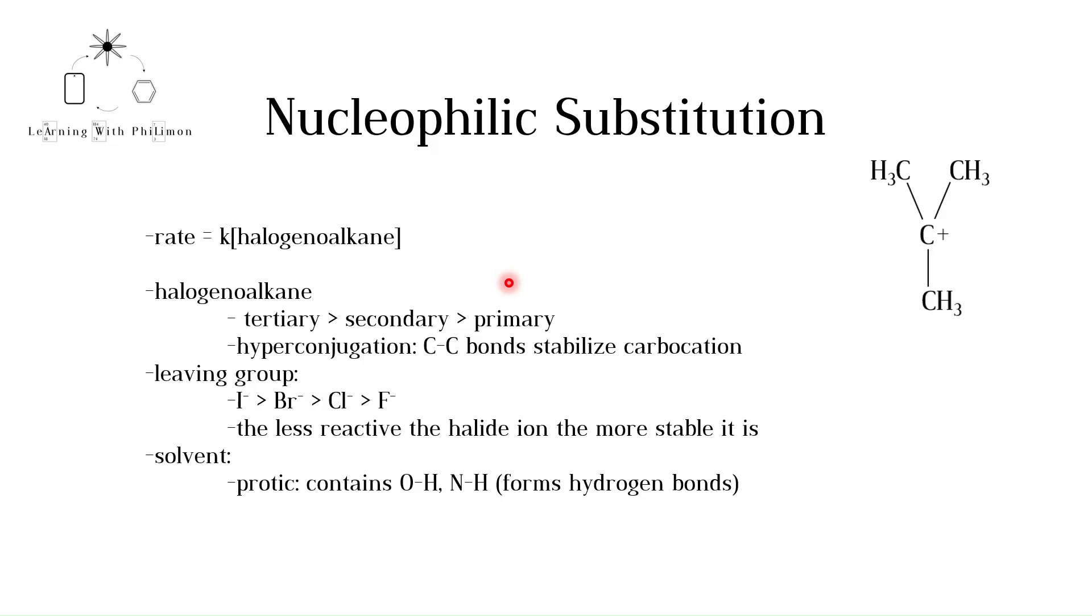This pattern is due to hyperconjugation. The shared electrons of these carbon-carbon bonds are attracted towards the positive carbon, as depicted by the green arrows. As the electrons are closer to the positive carbon atom, it has a slightly lower positive charge. The more alkyl groups a positive carbon is bonded to, the more stable the carbocation is.